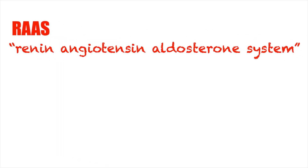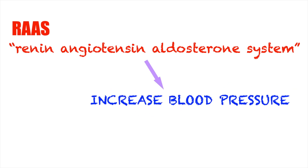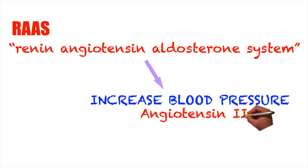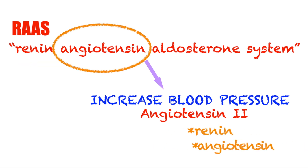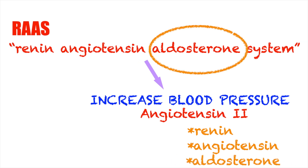So today we are going to talk about RAS. RAS stands for renin-angiotensin-aldosterone system. This system has one ultimate goal, and that is to increase blood pressure. For this to happen, a hormone called angiotensin-2 needs to be made. Angiotensin-2 is a byproduct of this system that involves three key elements: renin, angiotensin, and aldosterone. Let's talk about how this system works.